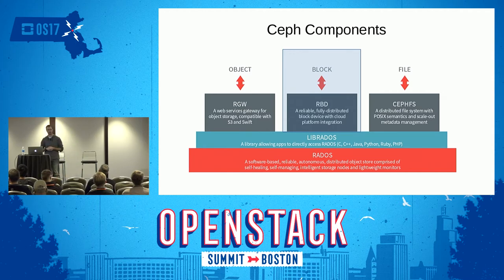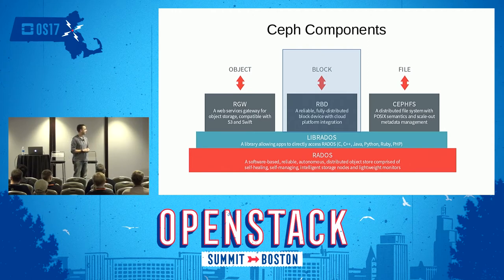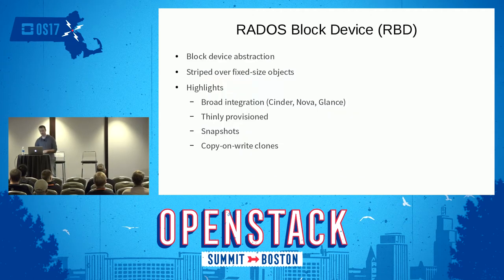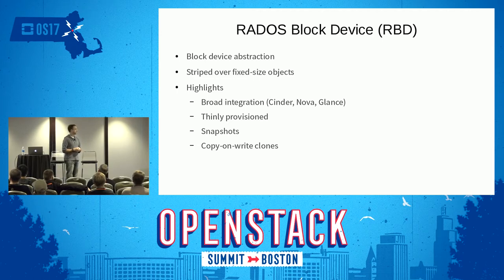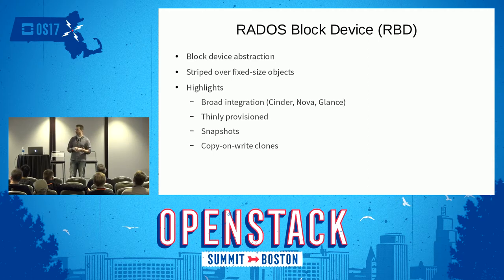When we talk about CEF, especially for people that work on the project, I always like to start with the three towers of CEF components built on top of the RADOS library underneath. We're going to be focusing in on RBD, the block portion. For those that don't know what RBD is: it's a block device abstraction layer built on top of RADOS. You have hundreds, thousands, tens of thousands of small objects within the RADOS cluster — that's a stripe. Your image, be it terabytes or petabytes, is broken up and striped over small, by default four-megabyte objects in the RADOS cluster.